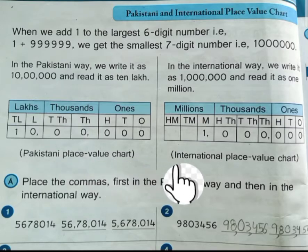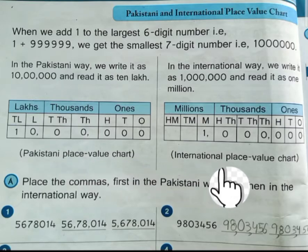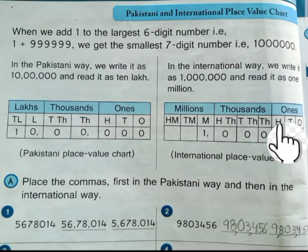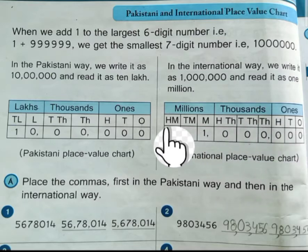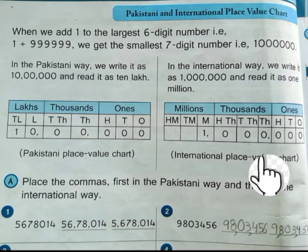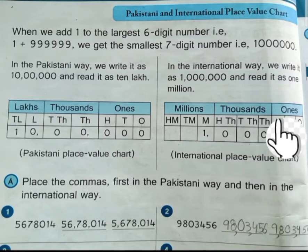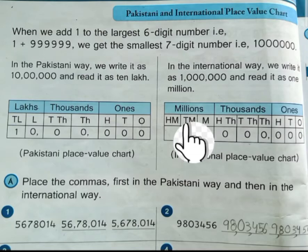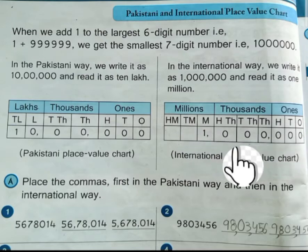Now look at the international place value chart. We learn to write 9 digits in it. The international place value chart is also divided into 3 periods: 1s, 1000s, and 10000s. In the Pakistani way, the 3rd period is lakhs.